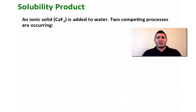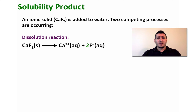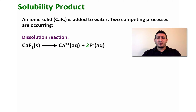When an ionic solid is added to water, two competing reactions occur. The first one is the dissolution reaction, which means that the solid will get dissociated into its corresponding ions. In this example, we can see that calcium fluoride will dissociate to give one Ca²⁺ ion plus two F⁻ ions.